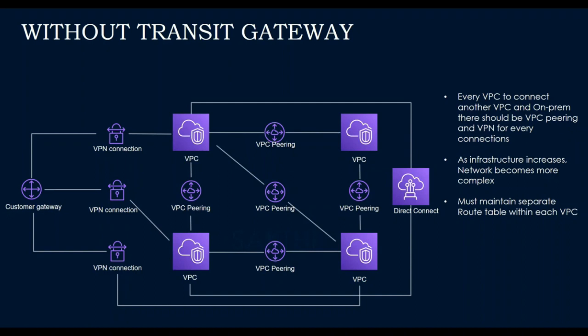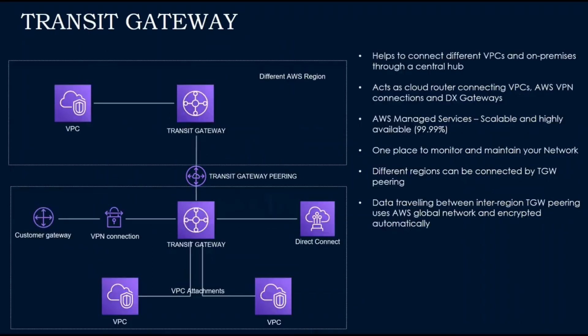As infrastructure increases, the network becomes more and more complex. As new VPCs come in, new VPC peering has to be established, and you must maintain a separate route table within each VPC. To avoid this complexity, AWS introduced Transit Gateway.